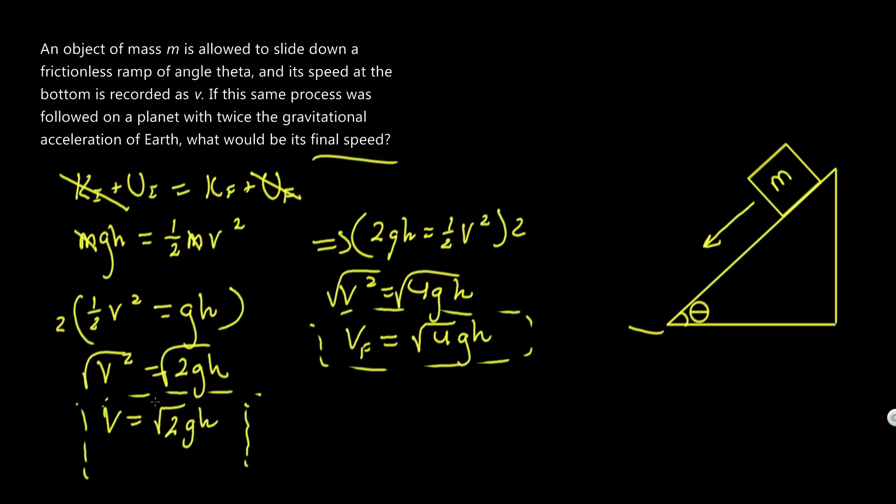And now we'll call this v final. And we'll just call this v. So now all we have to do is find v final relative to v. That's what the question is asking. So all we got to do is make a fraction, v final over v equals rad 4gh over rad 2gh. We can see that gh is canceled. And that leaves us with rad 4 over rad 2, which is again, rad 2. And now if we put that over 1 and cross multiply, we can get that v final equals rad 2 v, which is our answer.